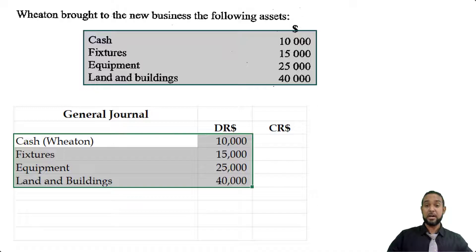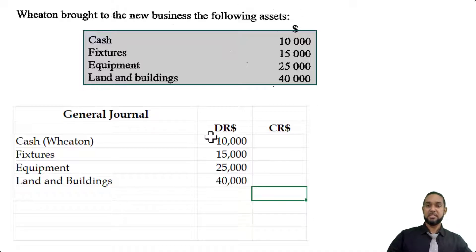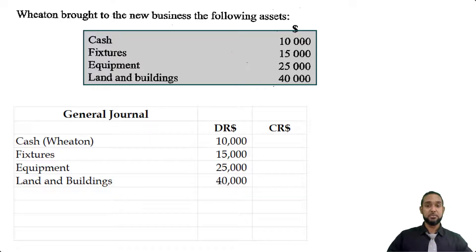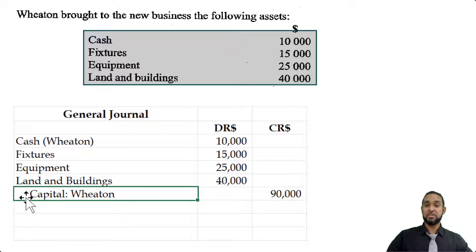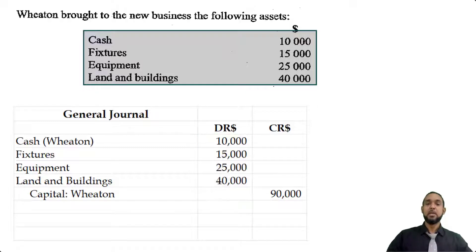Credit entries come after and they are indented relative to the debit entries. The credit entry is capital, because these assets came from Wheaton. Anything the owner puts in is classified as capital. So capital of Wheaton is $90,000 — arrived at by adding up those individual asset balances. We're going to put a narration that says: to record capital introduced by Wheaton.